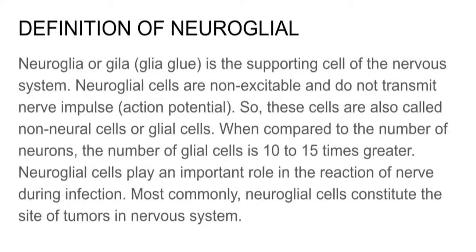Definition of Neuroglia: Neuroglia is the supporting cell of the nervous system. Neuroglia cells are non-excitable and do not transmit nerve impulses. So these cells are also called non-neuronal cells or glial cells. When compared to the number of neurons, the number of glial cells is 10 to 15 times greater.